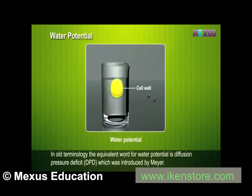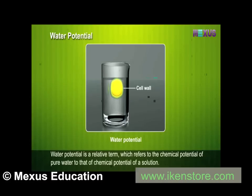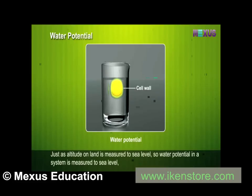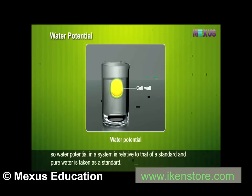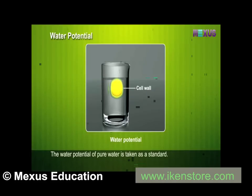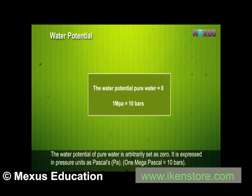The term water potential was introduced by Slater and Taylor. In old terminology, the equivalent word for water potential is diffusion pressure deficit (DPD), which was introduced by Meyer. Water potential is a relative term referring to the chemical potential of pure water compared to that of a solution. The water potential of pure water is arbitrarily set as zero. It is expressed in pressure units as pascals (Pa); 1 MPa equals 10 bars.